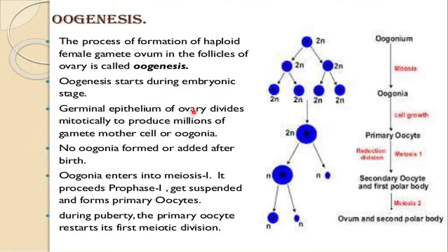The germinal epithelium of the ovary divides mitotically to produce millions of gametes — mother cells called oogonia — and no oogonia are formed or added after birth. The oogonia enter into meiosis I, proceed through prophase I, then get suspended and form primary oocytes.